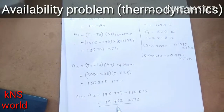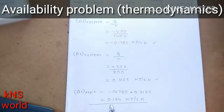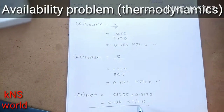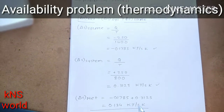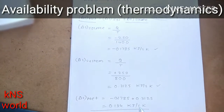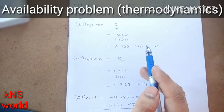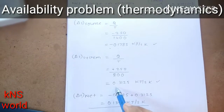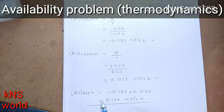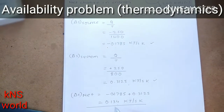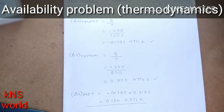This much energy — 39.832 kJ/s — is the decrease in available energy; we cannot use this much energy. From the first result, the net change in entropy is 0.134 kJ/s·K. For the source we got minus 0.1785 kJ/s·K, and for the system we got 0.3125 kJ/s·K. Please understand the concept of this problem.